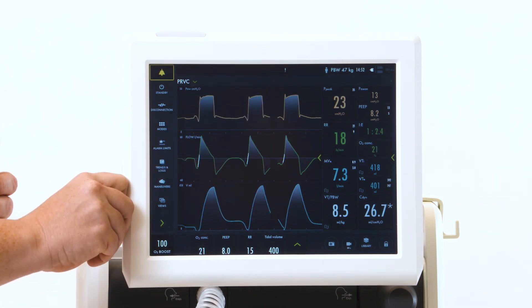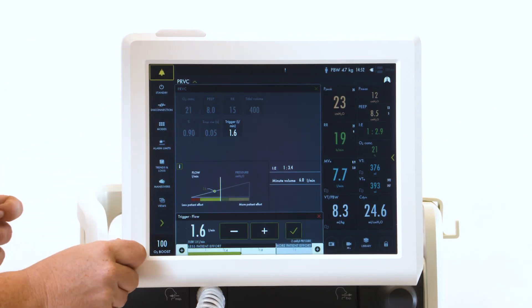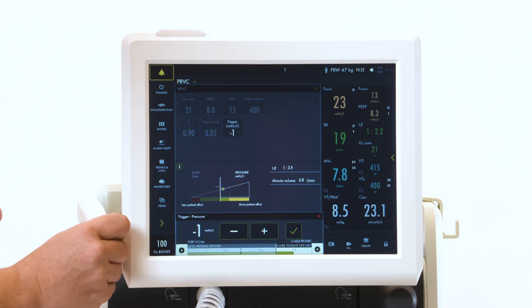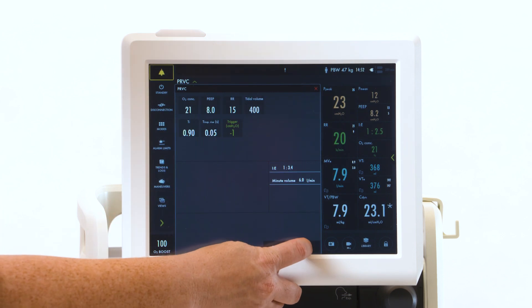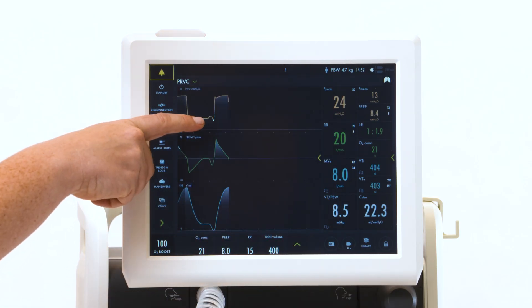If you would like to change to a pressure trigger, go to your mode and to your trigger setting. Here, you can then slide over to the pressure side indicating more patient effort and check mark to confirm. Now, you will see the deflection on the pressure scaler.